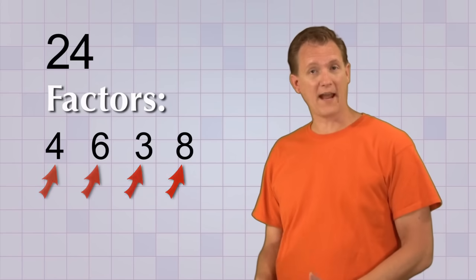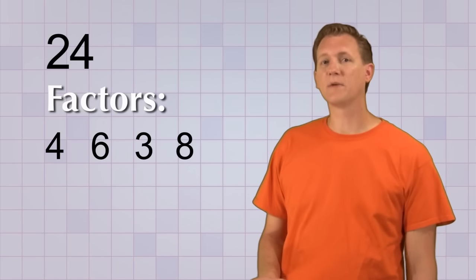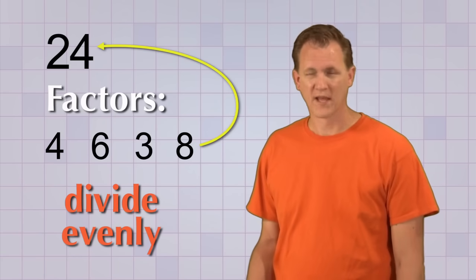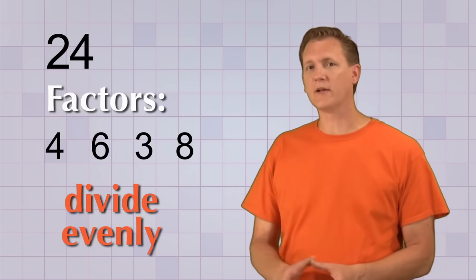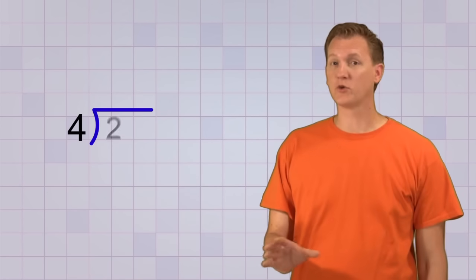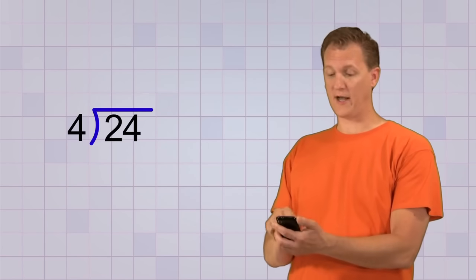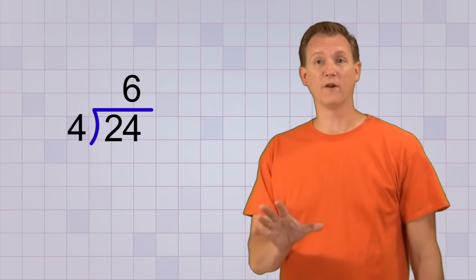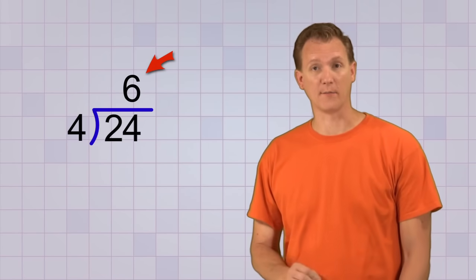The fact that each of these numbers is a factor of 24 means that each of them can divide evenly into 24. And when I say divide evenly, I mean that it will divide in without a remainder. For example, if we take our first factor, 4, and divide it into 24 using a calculator, our answer will be 6. 4 divides into 24 six times with no remainder.